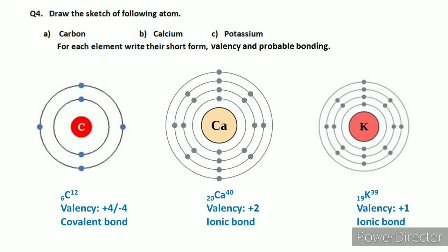First let's write carbon's short form. You all know that we have three pieces of information to use: first is the element symbol, second is the atomic number, and third is the mass number.